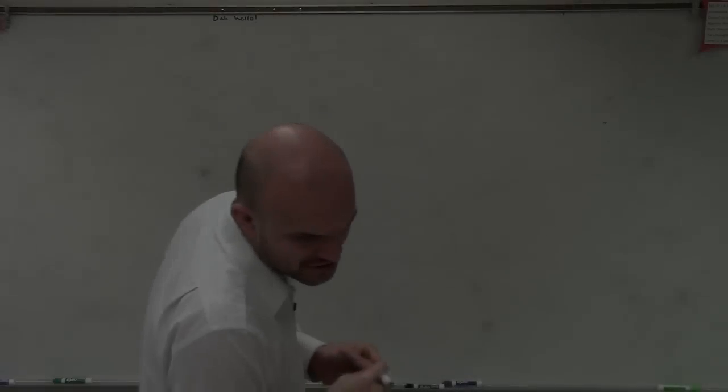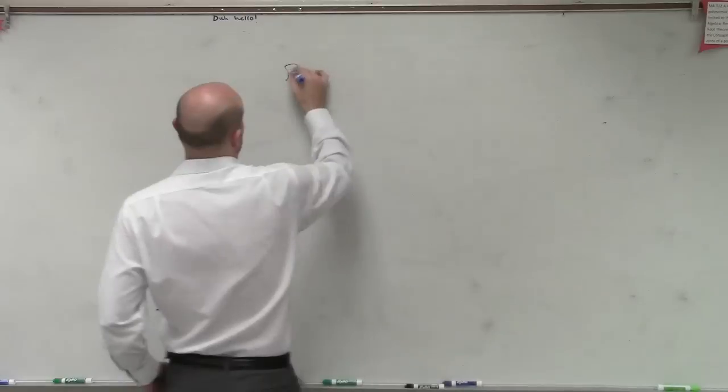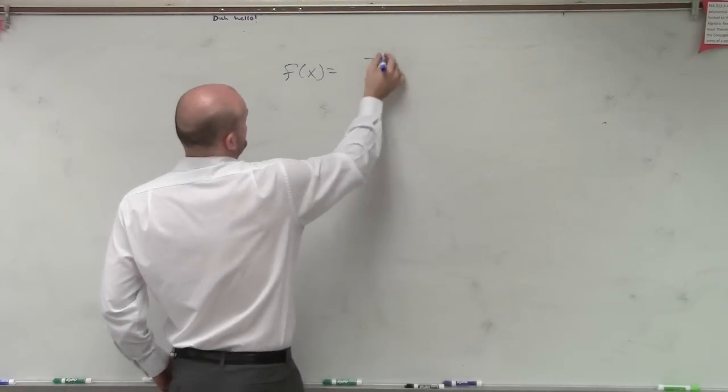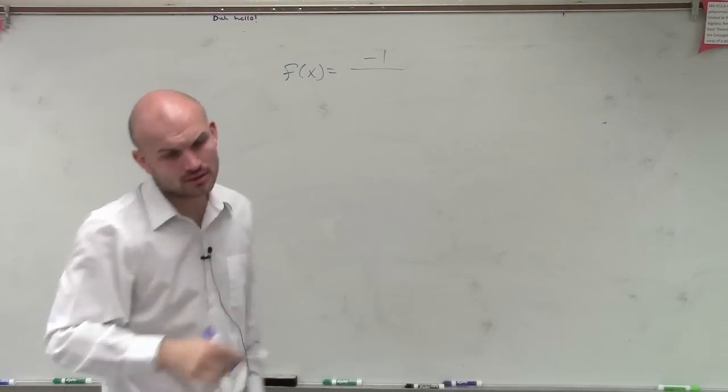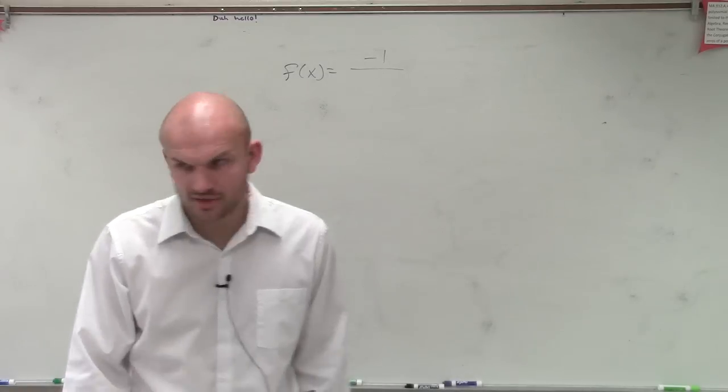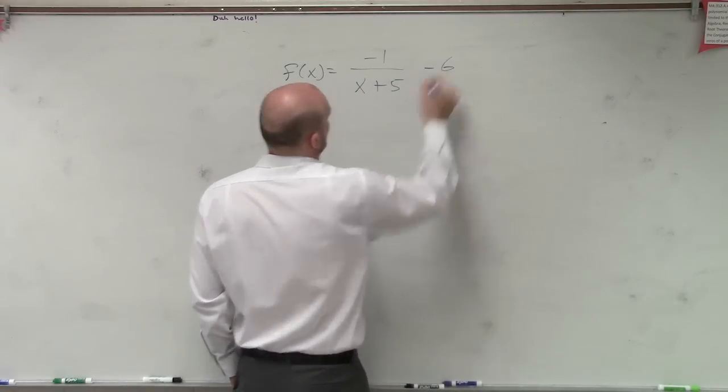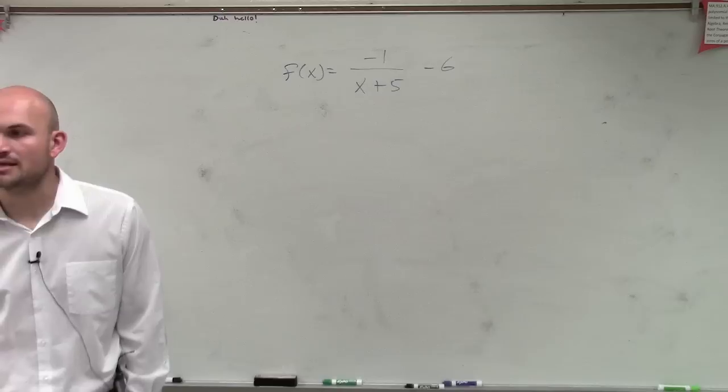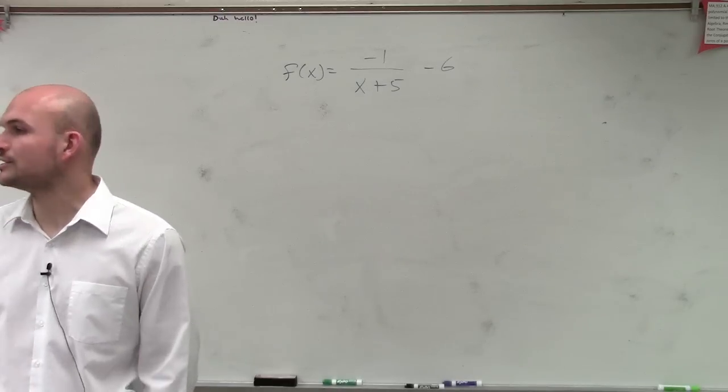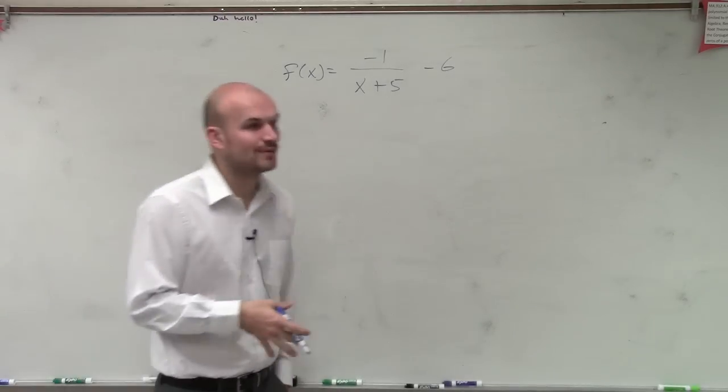I want us to graph number 4, which is f of x equals negative 1 over x plus 5 minus 6. So ladies and gentlemen, to do this, we could use a table, but I don't want to use a table of values, especially when I don't have to.